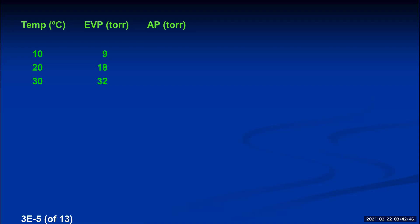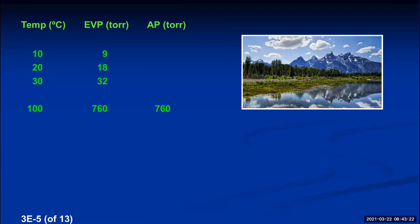At different temperatures, EVP increases. At sea level with atmospheric pressure of 760 torr, water boils when its EVP equals that value — exactly at 100°C. That's actually how 100°C was defined: the boiling point of water at 1 atmosphere. At high altitude, like the Grand Tetons in Wyoming, atmospheric pressure is only 634 torr, so water boils when its EVP equals 634 torr — which happens at only 95°C.